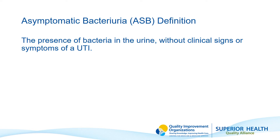When discussing UTIs, Asymptomatic Bacteriuria, or ASB, is often referenced. ASB refers to the isolation of bacteria in an appropriately collected urine specimen from an individual without symptoms of a UTI. It is common, and most people with ASB have no adverse consequences and do not need to be treated. It is important to note that treating ASB with antibiotics may be harmful. However, the sessions in this module address people that do have symptoms of a UTI.